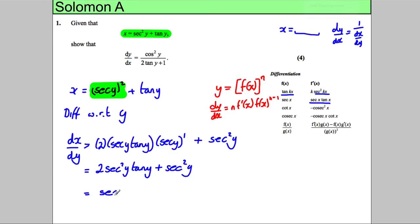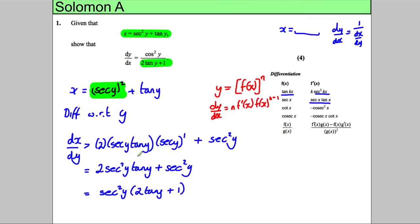What we can do then is factorize out the sec squared y, so this is sec squared y times two tan y plus one. Now looking at what we need to prove, we've got our two tan y plus one and we've got sec squared y which looks like it's one over cos squared y. So our dx by dy we could simplify this as two tan y plus one all divided by cos squared y, because sec squared y by its very nature is one over cos squared y.